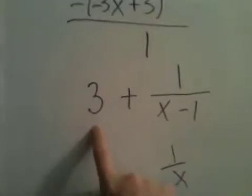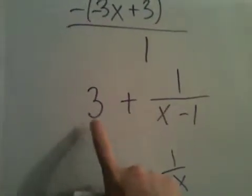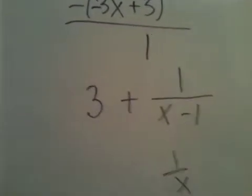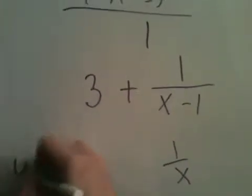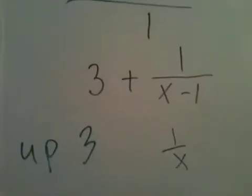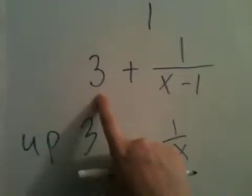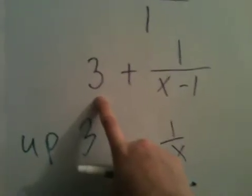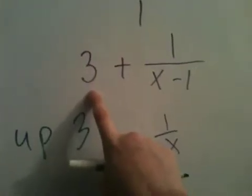This 3 out to the front, I am adding 3 to my function. If I'm adding 3 to my function, that is a shift of up 3. So if I have a number out to the side here, it's making me go either up or down, depending on if it's positive or negative.